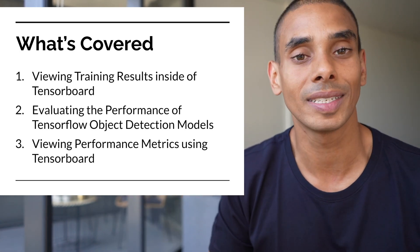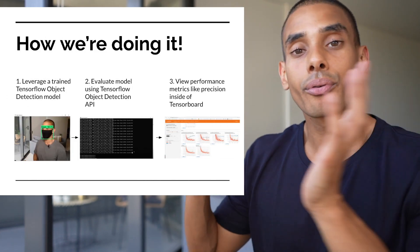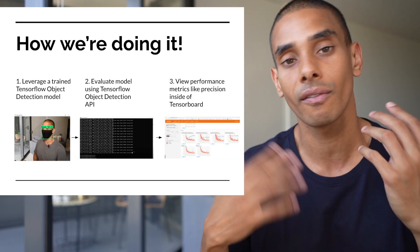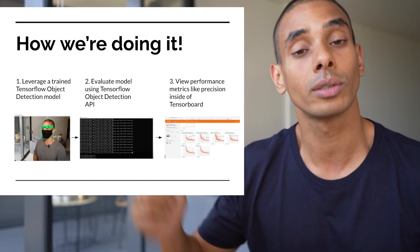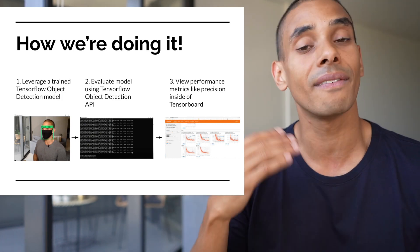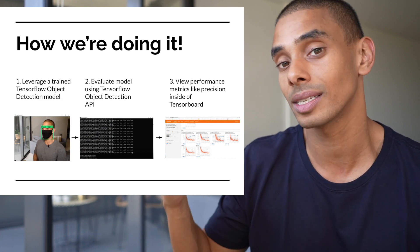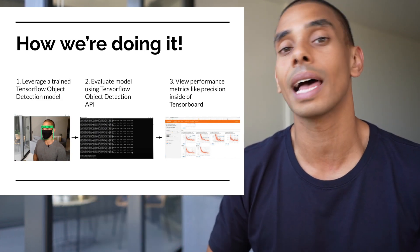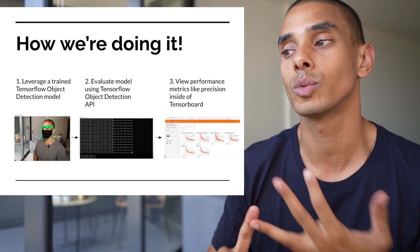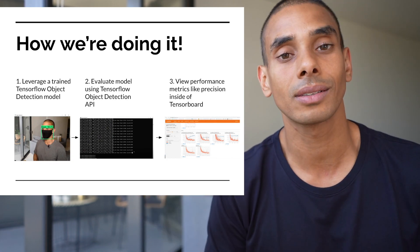Let's take a look as to how this is all going to fit together. First up, we're going to be leveraging a pre-trained TensorFlow object detection model. If you haven't done this, do check out the full-stack computer vision tutorials in the description. We're then going to run a script to evaluate our TensorFlow object detection model using the TensorFlow object detection API - a single script that calculates mean average precision, mean average recall, as well as viewing our loss metrics - and then visualize those inside of TensorBoard.